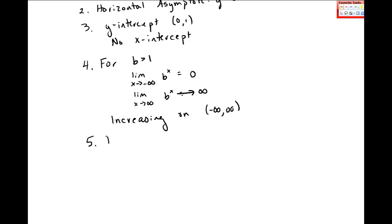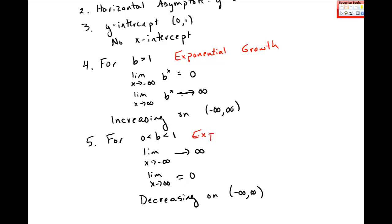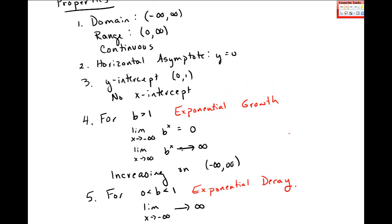And the last one is for the other case. For 0 is less than b is less than 1. This limit as x goes to minus infinity. This is getting really big. The limit as x goes to positive infinity is 0, and it's decreasing on minus infinity to infinity. In this case, this b greater than 1 is what we called exponential growth. And this one is called exponential decay. So you can use just these three points that I gave you as we're doing the examples to graph these, just knowing the basic shape of these functions. But this is kind of what exponential functions look like.